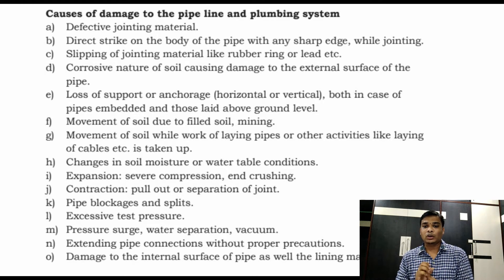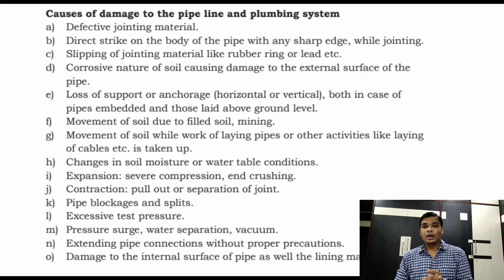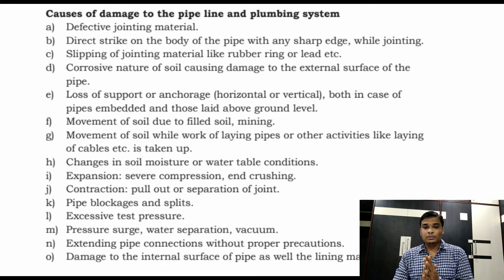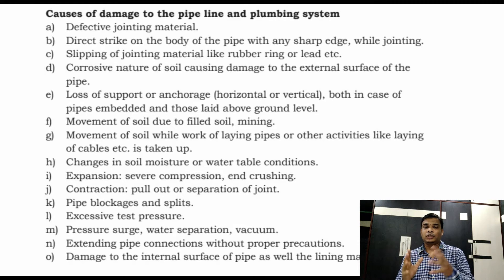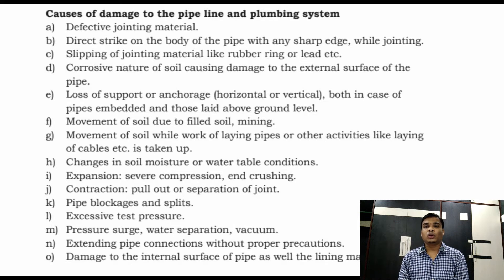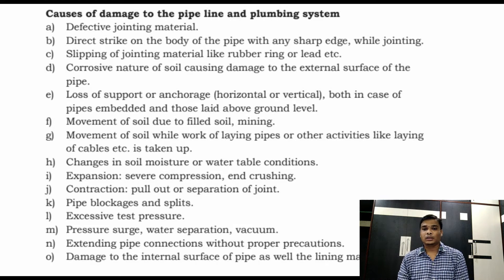Corrosive nature of the soil causes damage to the external surface of the pipe. This is one of the main causes affecting the base and the two parts of the pipe.